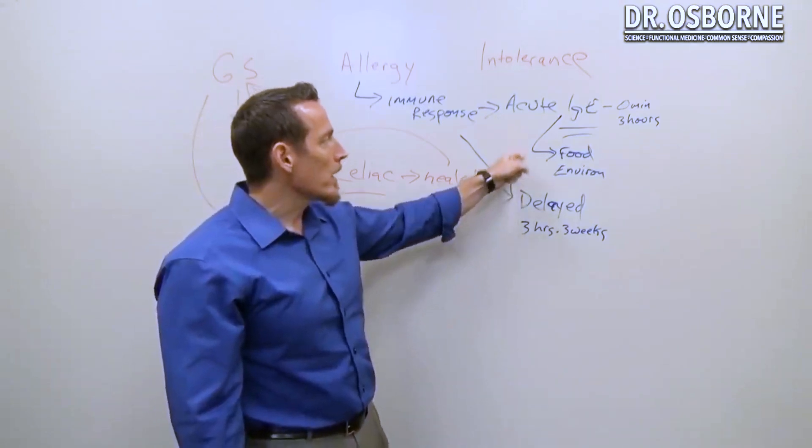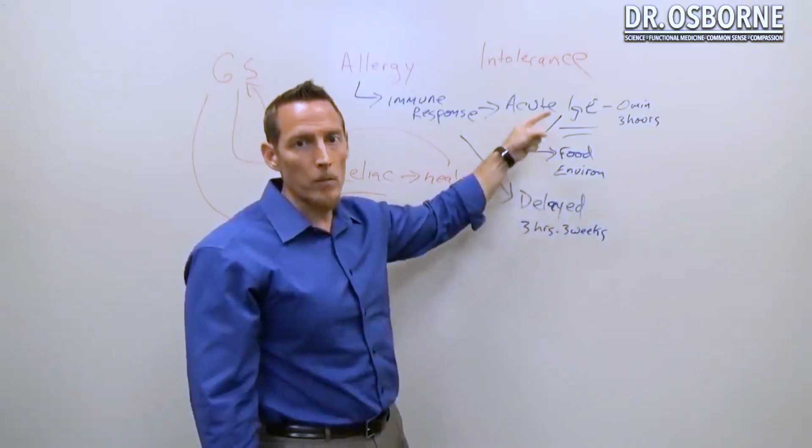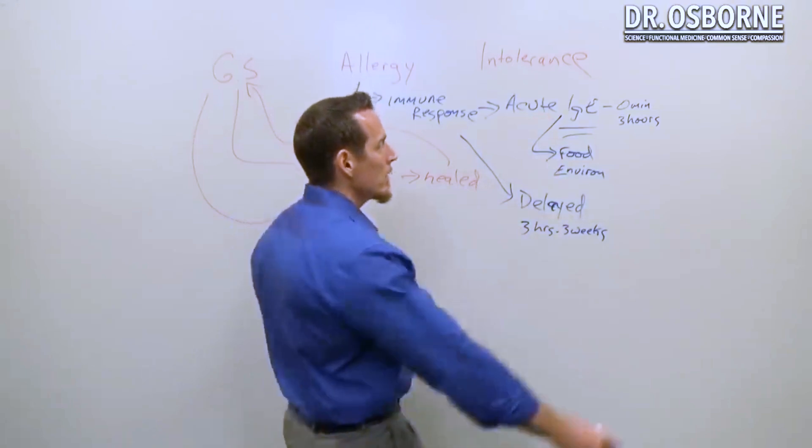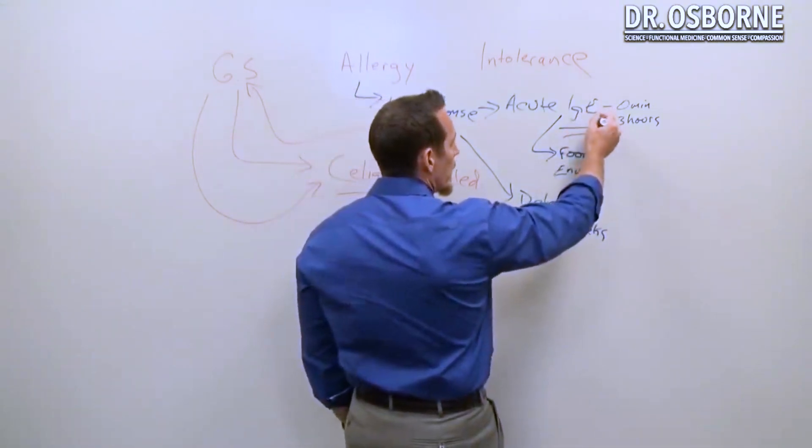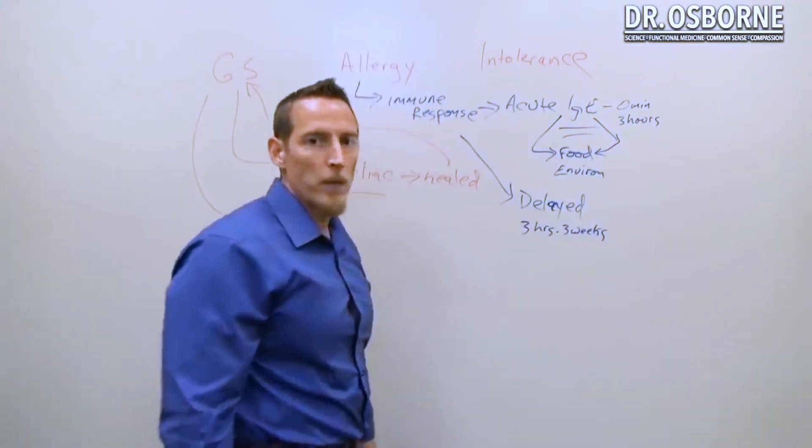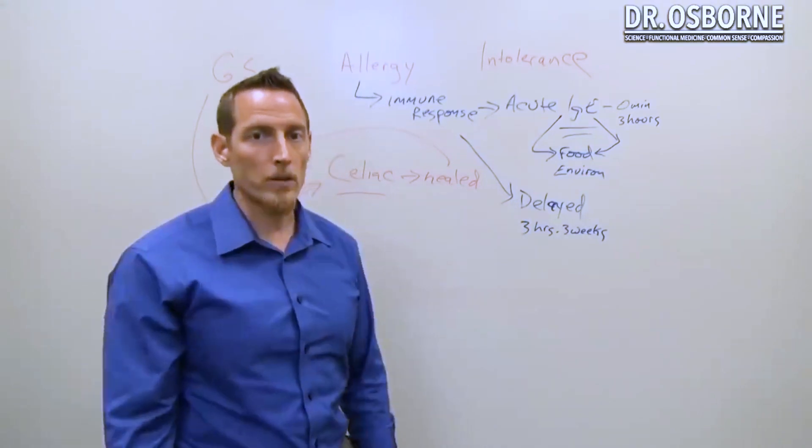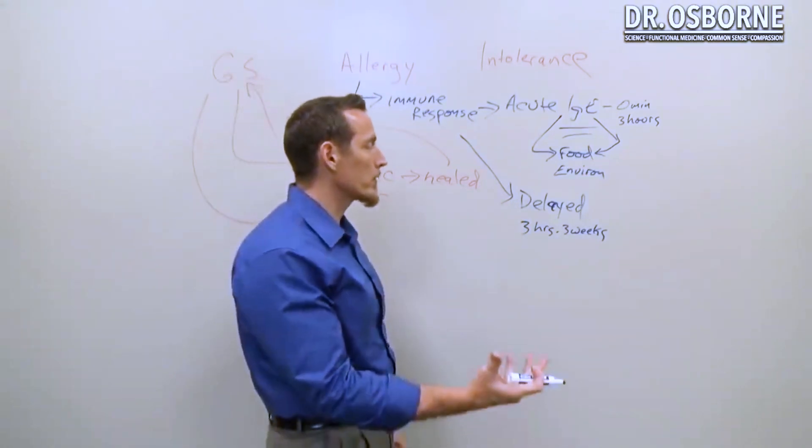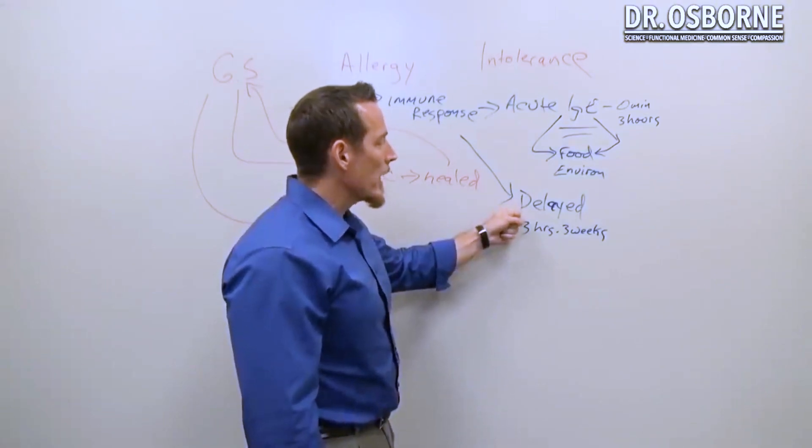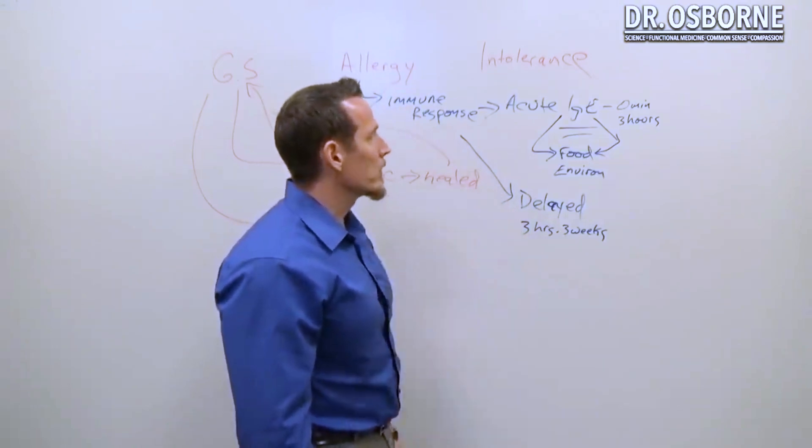So food elimination diets work really, really well for identifying acute reactions, but they work horribly for trying to identify a delayed reaction. So allergies can be delayed, allergies can be acute. If you really want to differentiate the difference, you have to have your doctor measure them both. If they're not measuring them both, then what ends up happening is you get this very confusing report. You potentially eliminate the foods that they were testing you for and you don't feel any better because you have delayed allergies that weren't tested for.